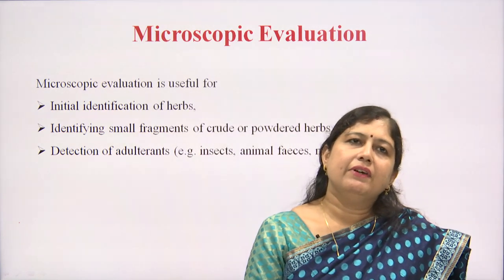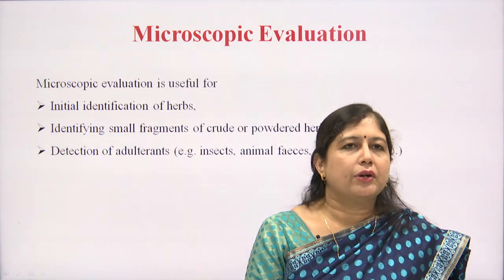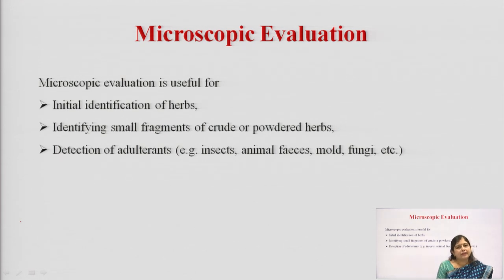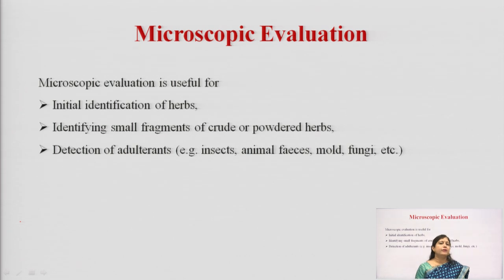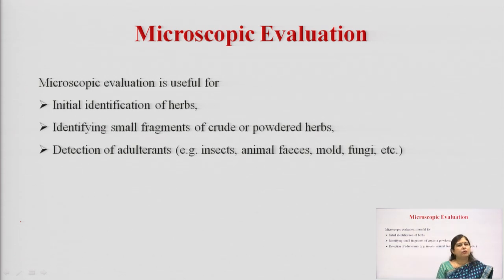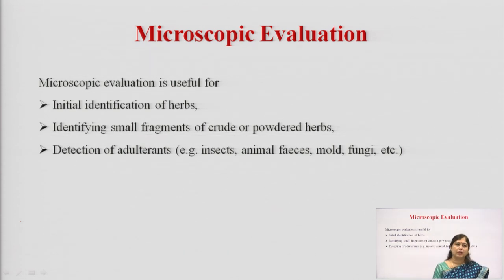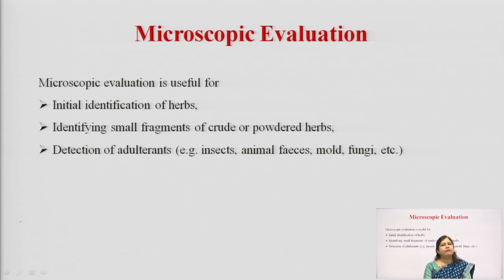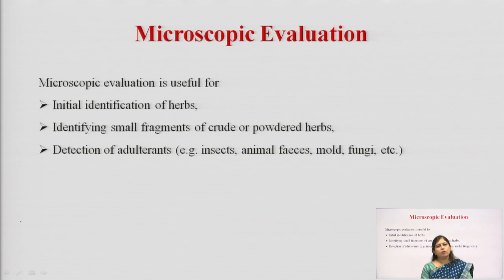As we discussed in our last class, we covered organoleptic evaluation and the different sense organs used to study a particular drug. Continuing from that, we are going to study about the microscopical evaluation as well as the physical evaluation of these crude drugs. Many a time when we see a drug morphologically we cannot identify the adulterants present based on organoleptic evaluation alone, so we have to go for microscopic evaluation.